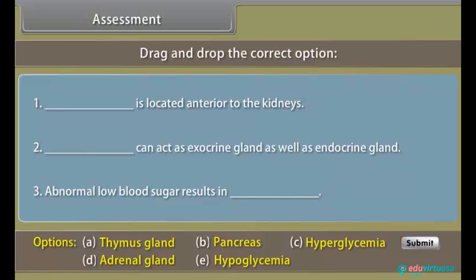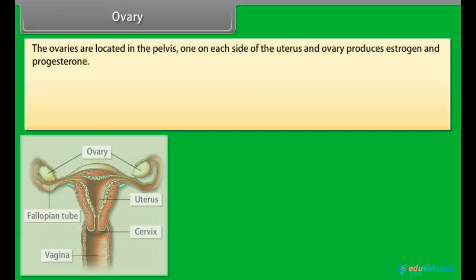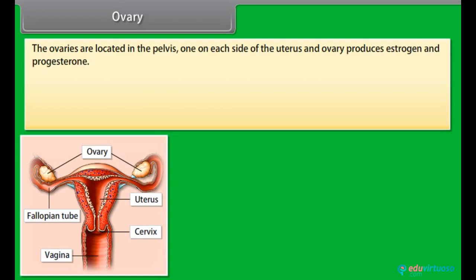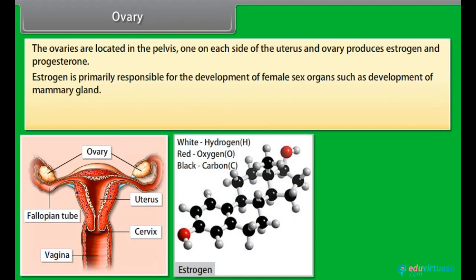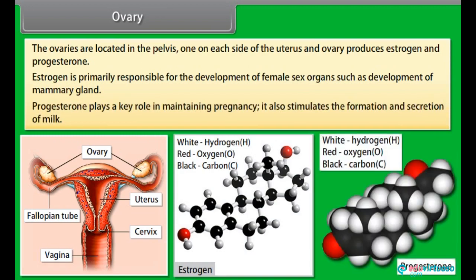Assessment: Before proceeding further, let us know how much you have learned. The ovaries are located in the pelvis, one on each side of the uterus, and they produce estrogen and progesterone. Estrogen is primarily responsible for the development of female sex organs, such as the development of mammary glands. Progesterone plays a key role in maintaining pregnancy and also stimulates the formation and secretion of milk.